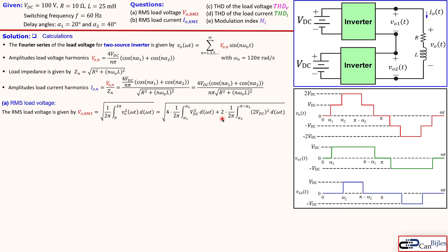Evaluating the two integrals gives an expression with V_DC squared out front. The factors simplify: the 4 and 2 reduce, and we obtain (2V_DC²/π)(α2 − α1) plus (4V_DC²/π)(π/2 − α2). Combining terms, we get 2V_DC² times (2π − 3α2 − α1), all divided by π — which can be further simplified to 4V_DC² inside the square root with the clean final expression.